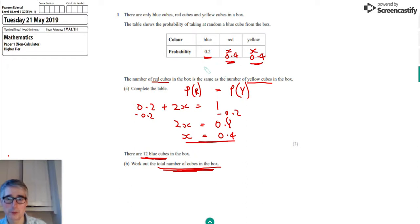So if we've got 12 blue cubes in the box, we can see that there must be, must actually be 24 red and 24 yellow. And that's because the probability of getting a red is twice that of getting a blue.